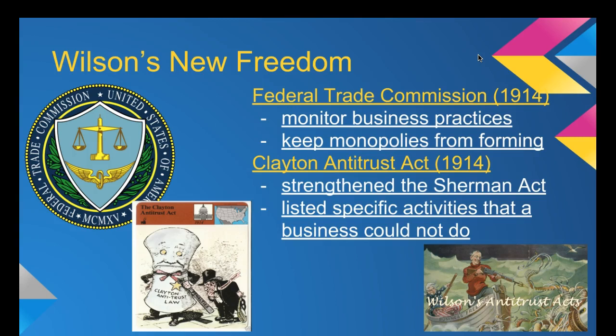Also in 1914, Congress passed the Clayton Antitrust Act, which strengthened the previous Sherman Act. The way it made the law stronger was by listing specific activities that a business could not do. Many businesses had started finding loopholes around existing laws to create big monopolistic businesses. The Clayton Act attempts to put an end to that — if a business performs one of those prohibited activities, it either has to change or face serious consequences. That's how we continue to make sure monopolies and trusts do not form.